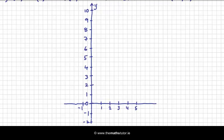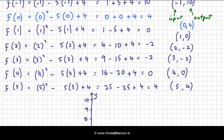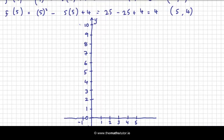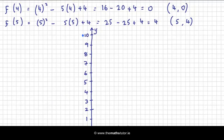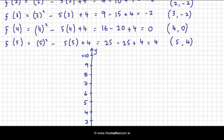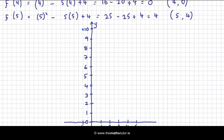And now I'll plot my points. Minus 1 was mapped on to 10. So minus 1 is here and there's 10. So you go across to minus 1 as your input and up to 10. 0 is mapped on to 4. So across to 0 and up to 4. 1 is mapped on to 0.